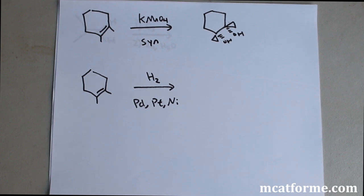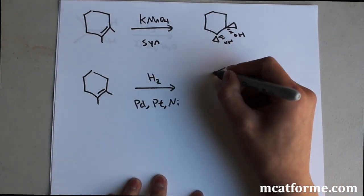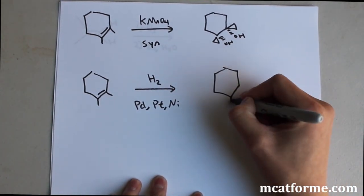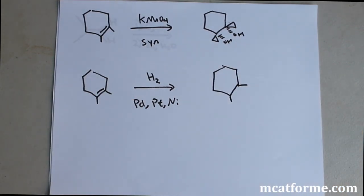Now we're going to be adding H2 to the alkene molecule. If we want to get from an alkene back to an alkane we're just going to add this H2 and one of these three metals.